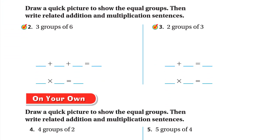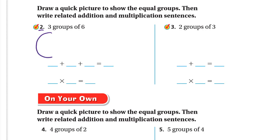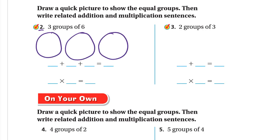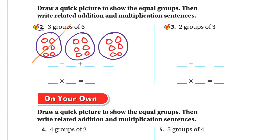Now draw a quick picture to show the equal groups, then write related addition and multiplication sentences. Number two: three groups of six. We draw three groups, each with six small circles. To write the addition sentence: six plus six plus six — six plus six is twelve, twelve plus six is eighteen. To write the multiplication sentence: three groups times six in each group, so three times six equals eighteen.